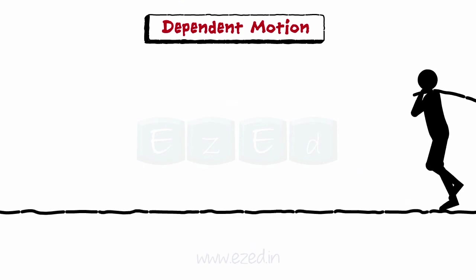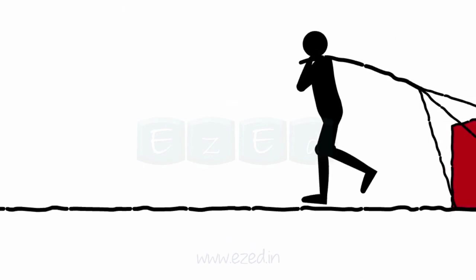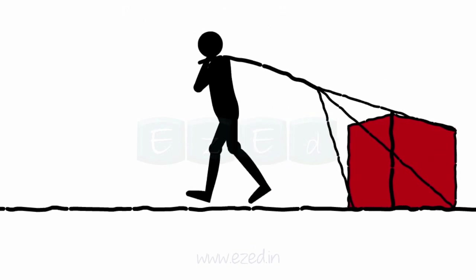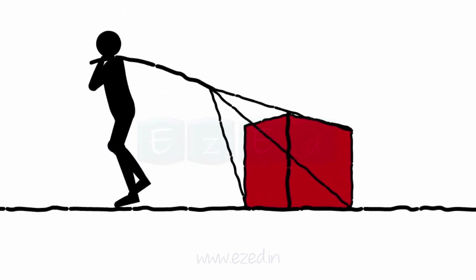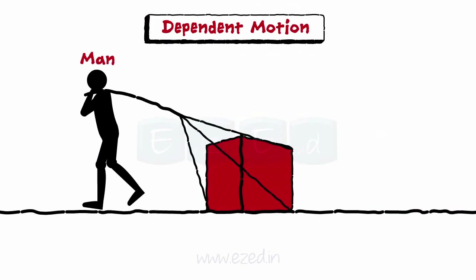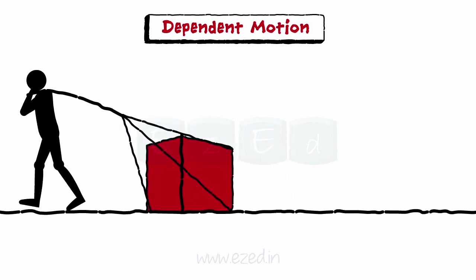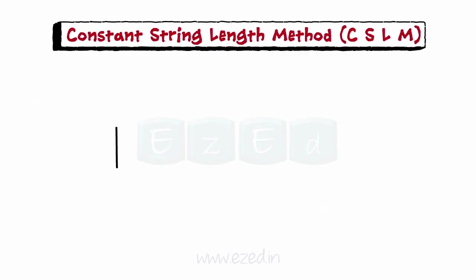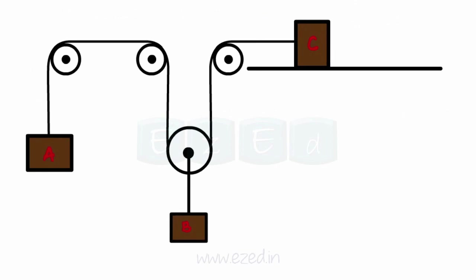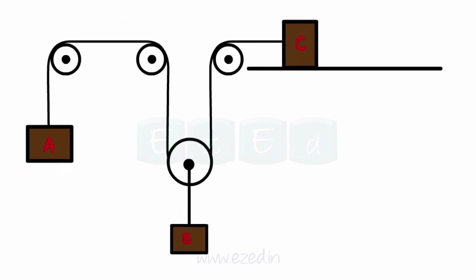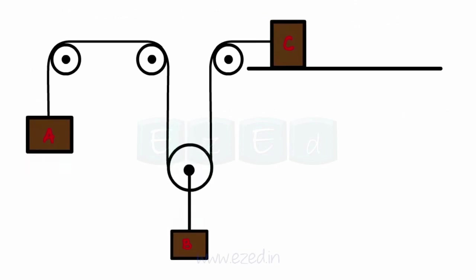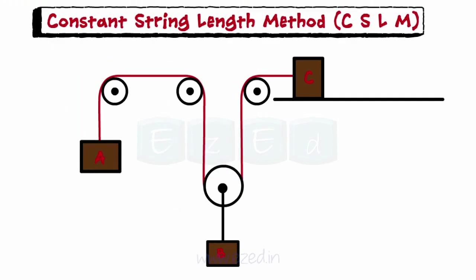In dependent motion, the motion of a particle is dependent on the other particle in the system. As we can see, a man is moving a block, so the motion of the block is dependent on the man. Dependent motion systems are usually connected to one or more ropes or strings. For such a situation, we apply the constant string length method, which is applied where the length of the string or rope is constant irrespective of the position of the particles.